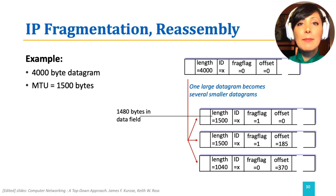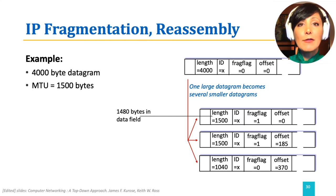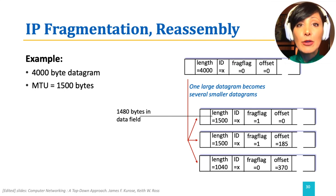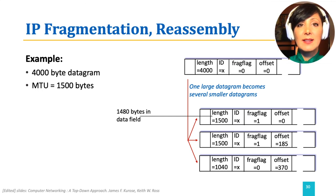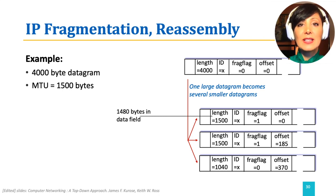The third datagram will have the remainder of the bytes, plus 20 bytes for the header, giving a total length of 1040. The fragmentation flag will be 0, showing that it is the last segment in the fragment, and the offset showing its starting byte, which is 2960 divided by 8, which is 370.